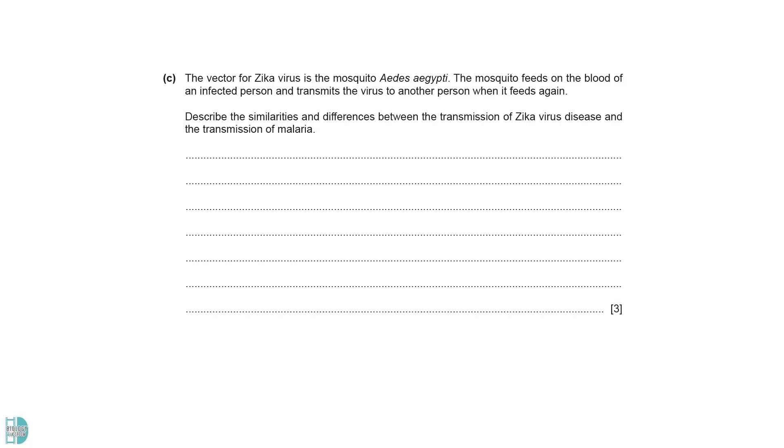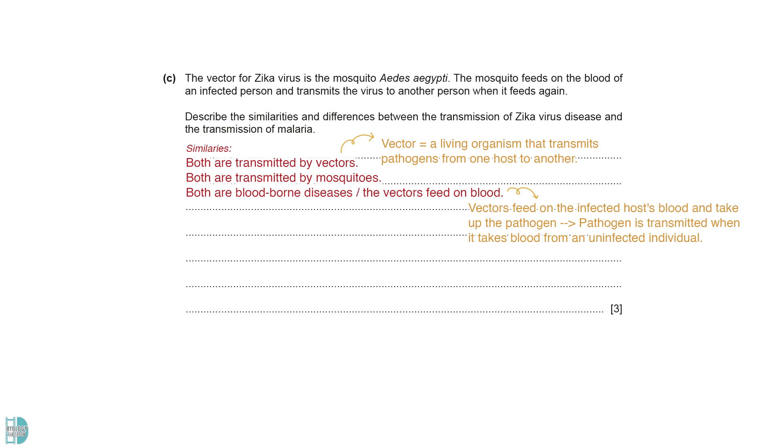Describe the similarities and differences between the transmission of Zika virus disease and the transmission of malaria. They are both transmitted by vectors. A disease vector is a living organism that transmits pathogens from one host to another. The vectors for both diseases are mosquitoes. The vectors feed on the infected host blood and take up the pathogen. When they feed again on an uninfected individual, the pathogen is transmitted. This is known as a blood-borne disease.